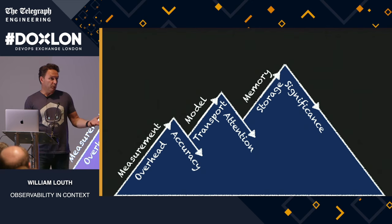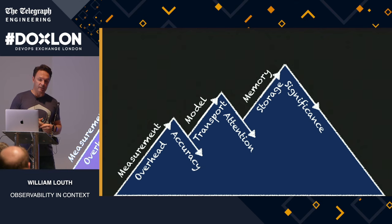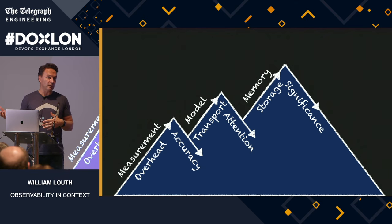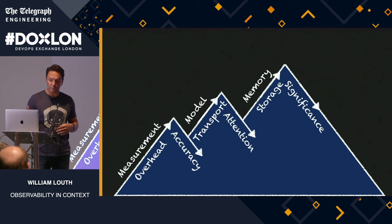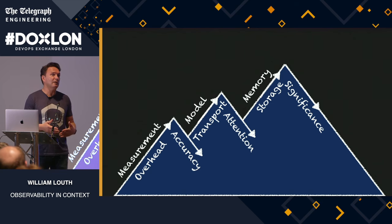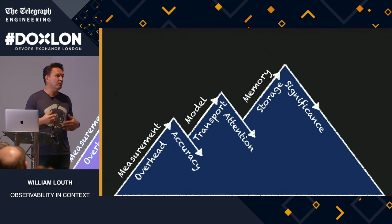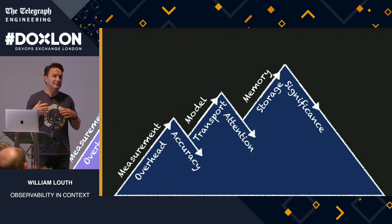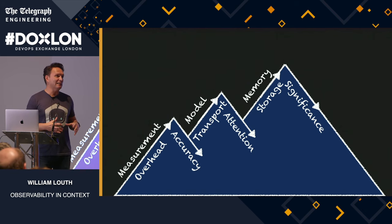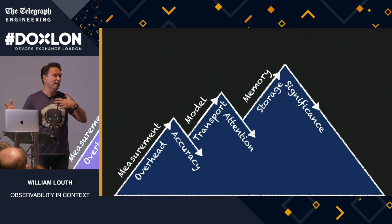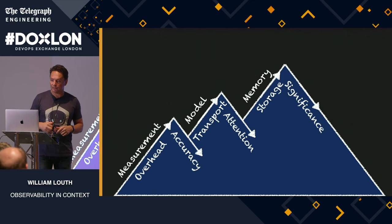In terms of measurement, the more measurement you have, the greater the overhead — overhead means less accuracy. With model, the more you collect in your environment, transport goes up, attention goes down, because you have to see everything. When you start to collect everything, you have to say: what should I watch? Our brain is designed to pick out the significant events. But today, observability is like 'more data' — eventually I'll figure out what that data means. And I don't think that's right.